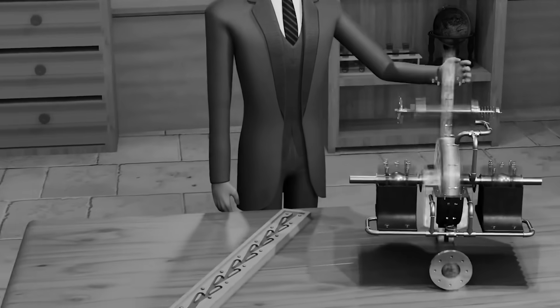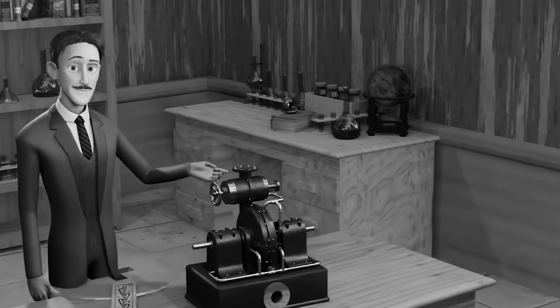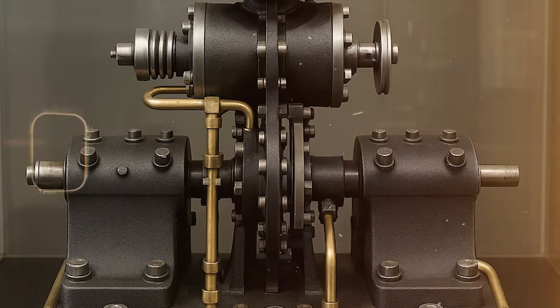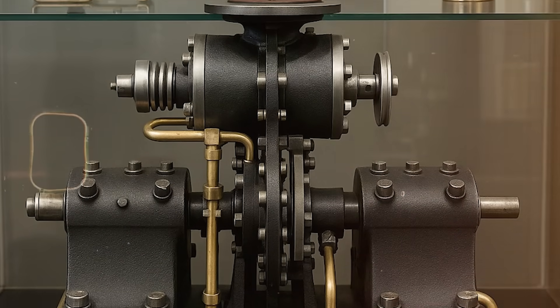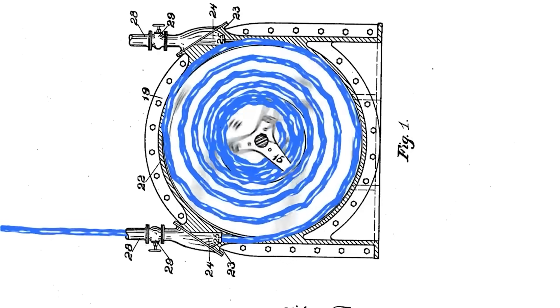By exploiting this layer, Tesla managed to design a turbine that works with the flow of nature, rather than against it. Every molecule of air or steam contributes to the rotation, not by impact, but by cohesion. This means less turbulence, less noise, and less mechanical stress.